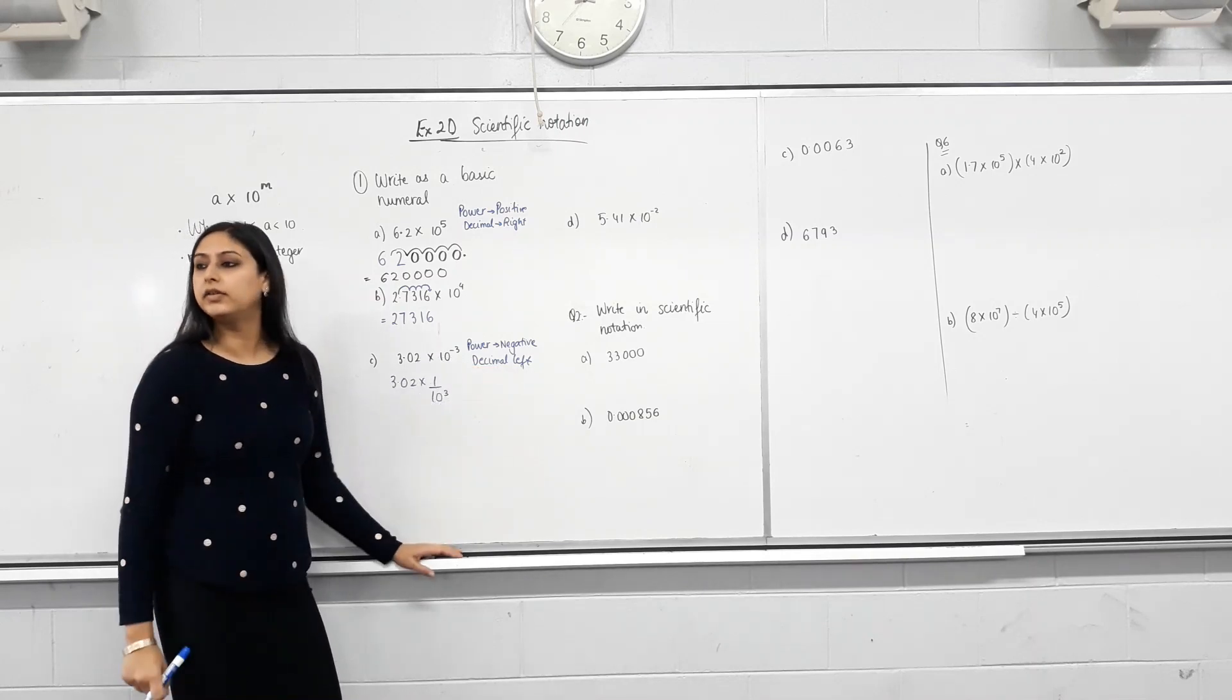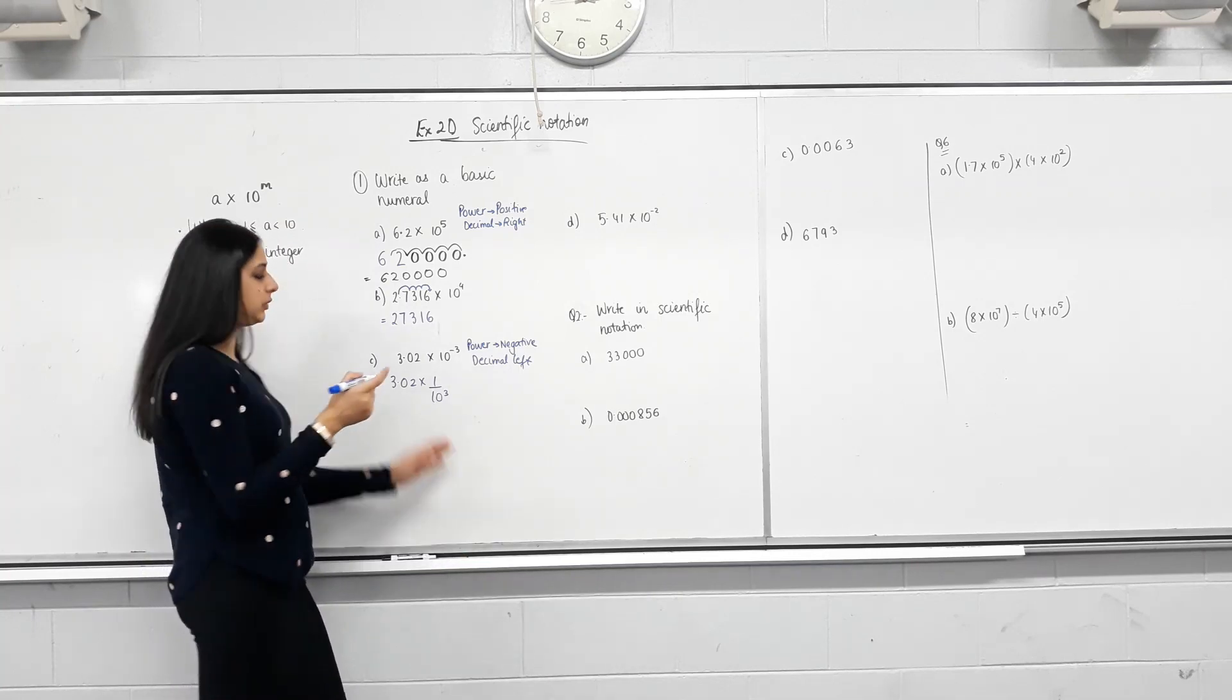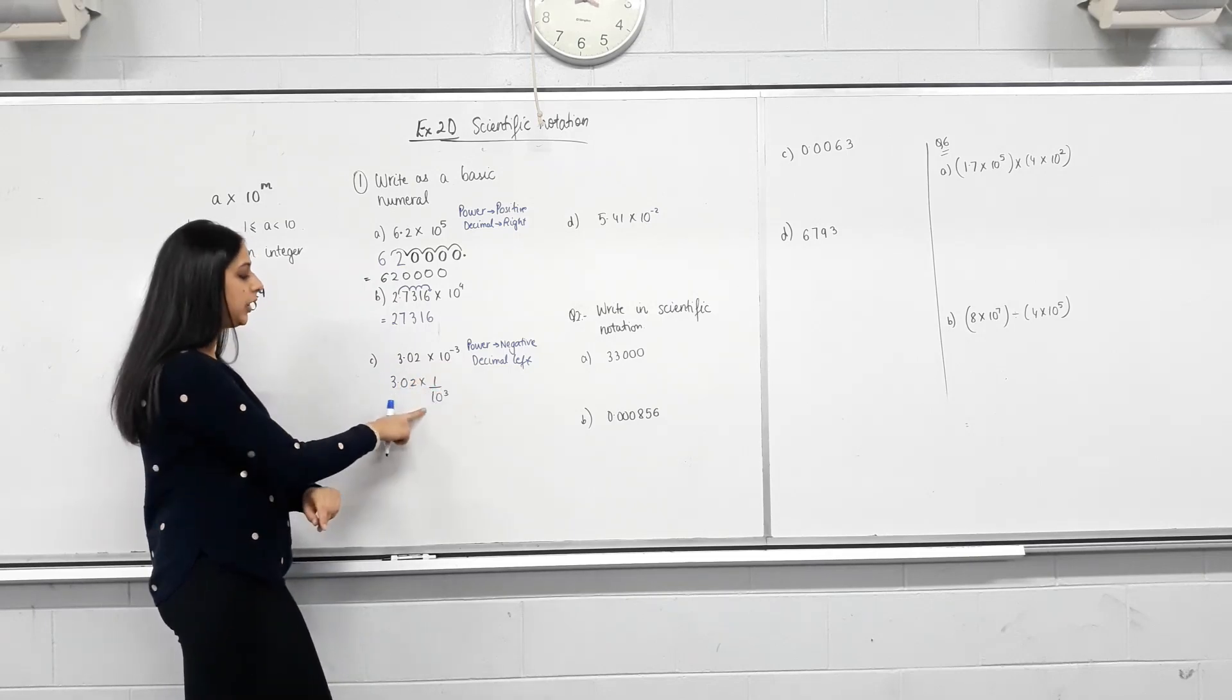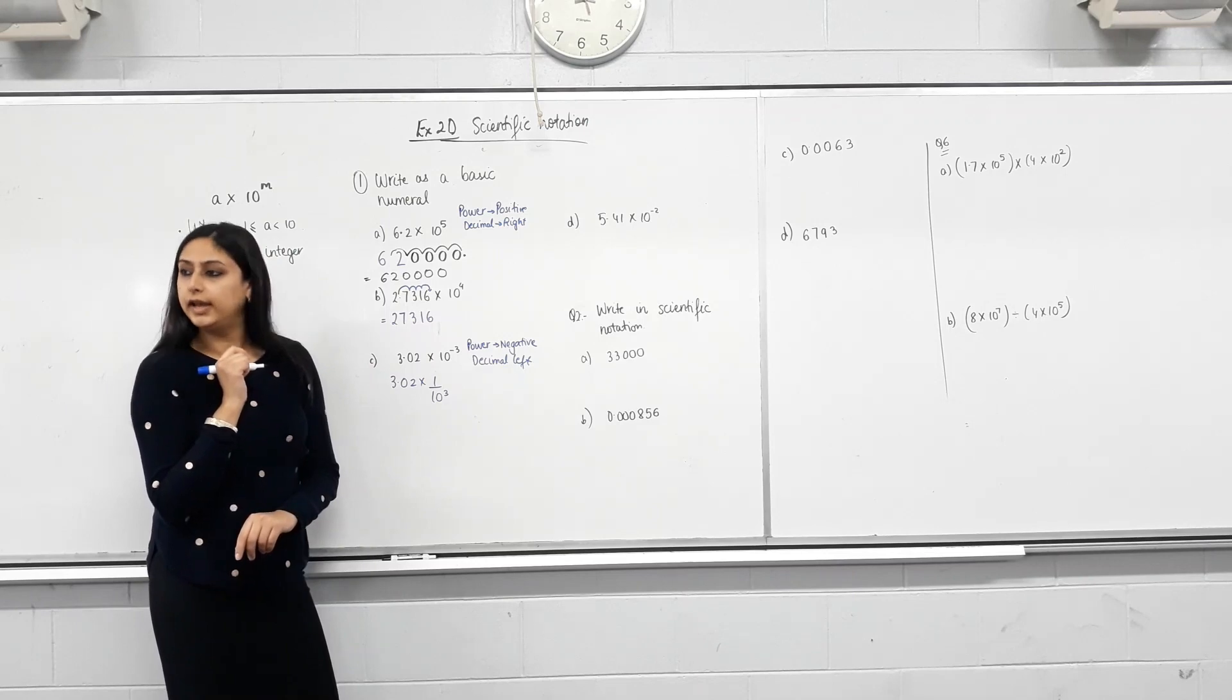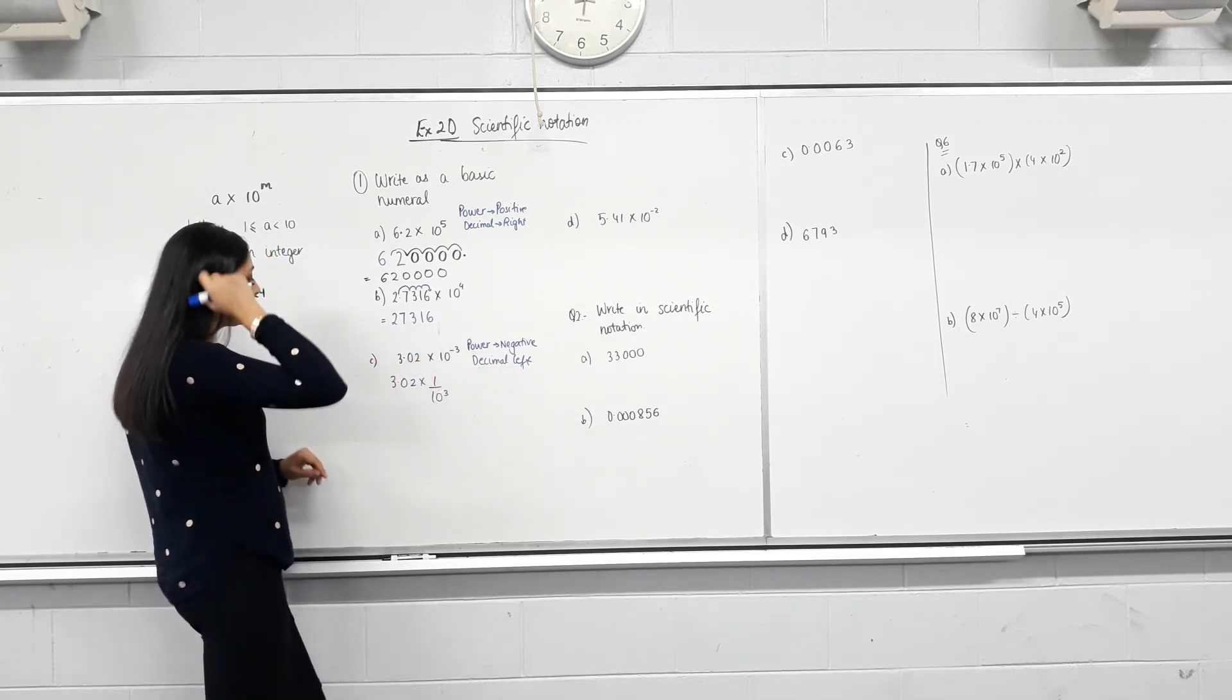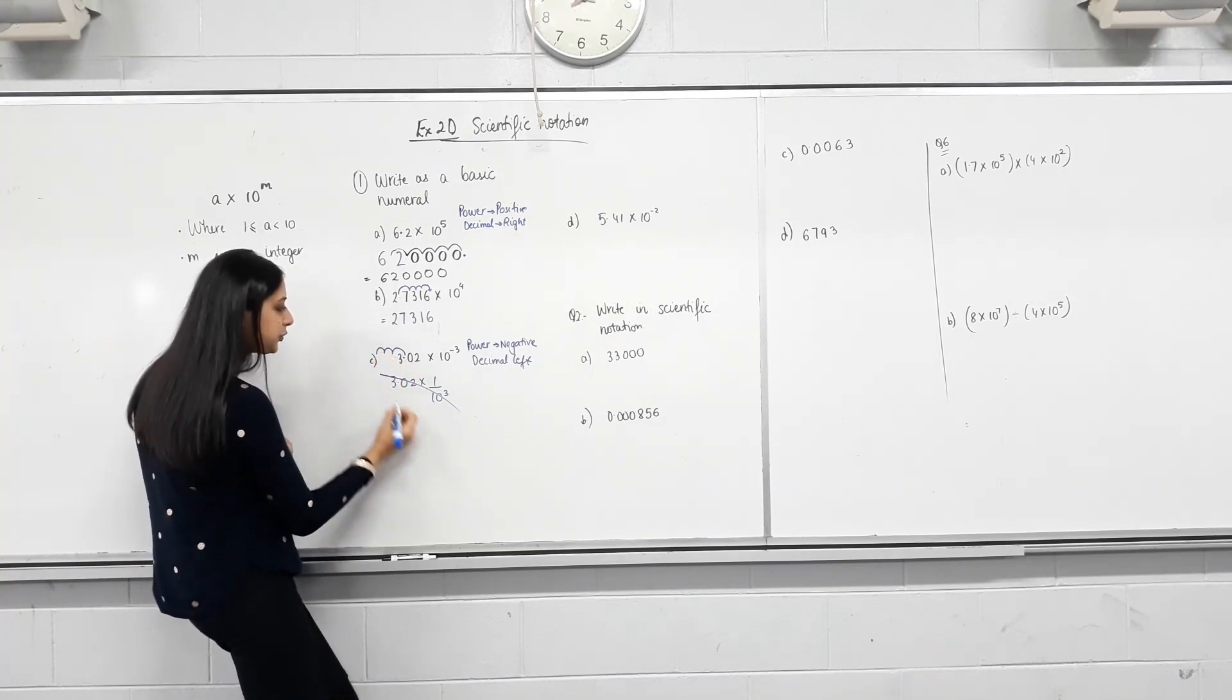And that is why the decimal moves to the left. Does that make sense? So the shortcut is this. Because it's a negative index, we have done what negative index means. Negative index means it is one over, the reciprocal of that. So 10 to the power of negative three means one over 10 to the power of three. So basically now you're dividing this by a thousand. And that is why the decimal moves to the left. Does that make sense? So the shortcut is this, the understanding is this. Now, you don't need to write that. So the decimals here, so one, two, three. So what do I fill the gaps with? Zero.